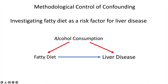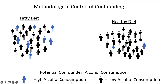Here we're hypothesizing that those who engage in high alcohol consumption might be more likely to have a fatty diet, while a more reasonable explanation is that those who engage in a healthy diet might be health-conscious overall and might be more likely to consume less alcohol or no alcohol at all. So now if we measured high alcohol consumption — where high alcohol consumption here is the blue people — we can see that those who engage in a fatty diet have a higher prevalence of alcohol consumption in this group, and they're no longer exchangeable.